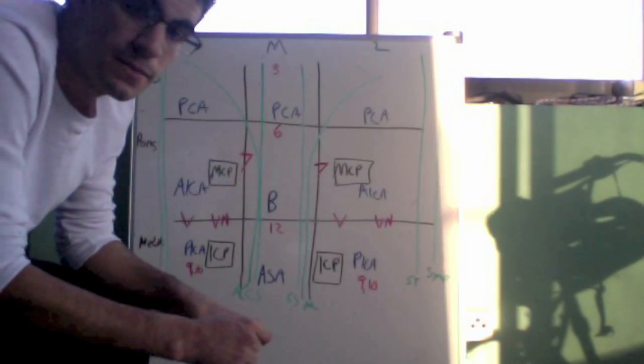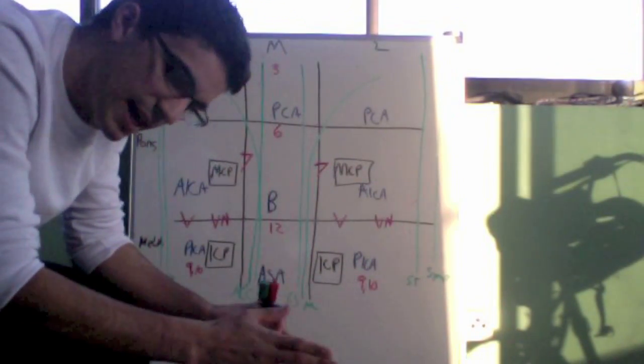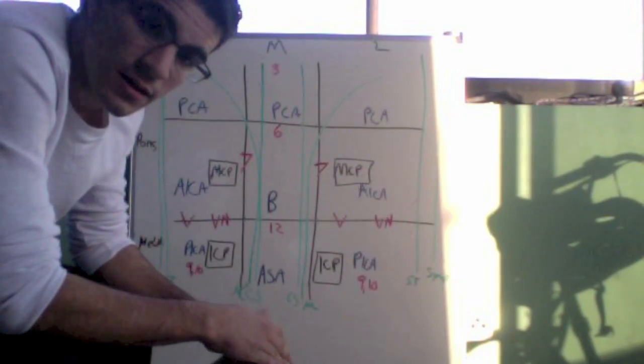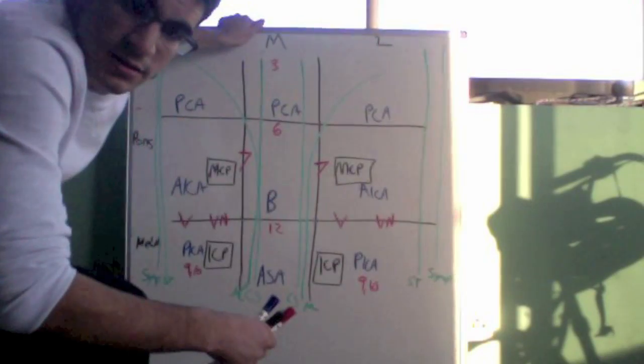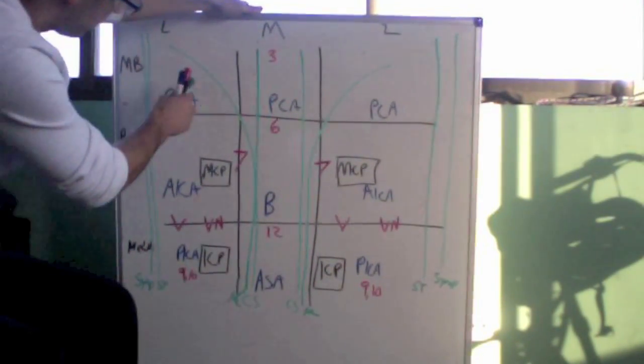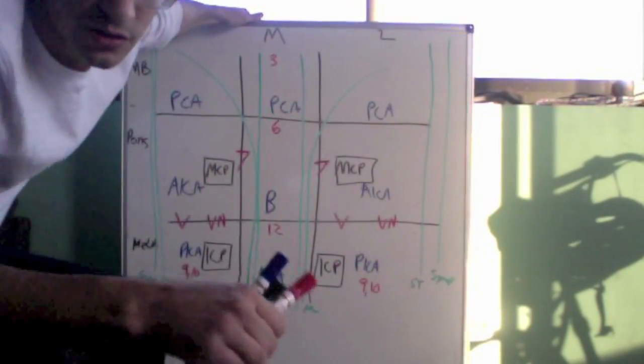You get that all done, you won't get a question wrong on the test. When you sit down for the test, sit down, draw this all out, and then any time you get a stroke question, you match the symptoms to the zone, you match the symptoms to the zone of the tic-tac-toe board, and you'll get the answer to the question right.